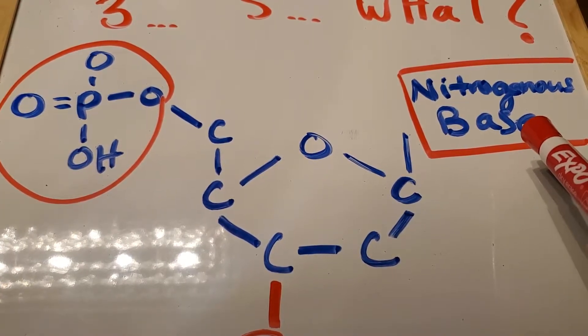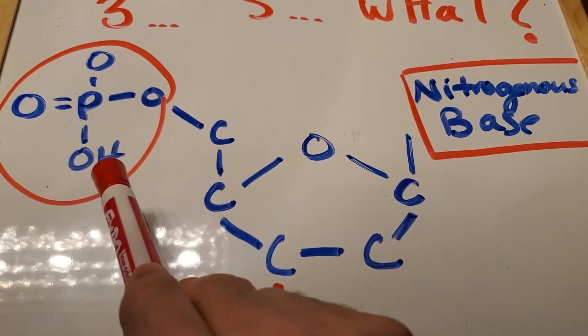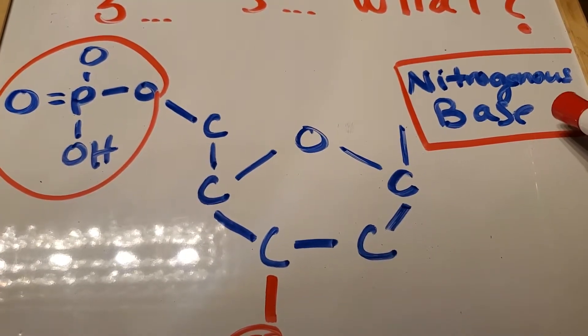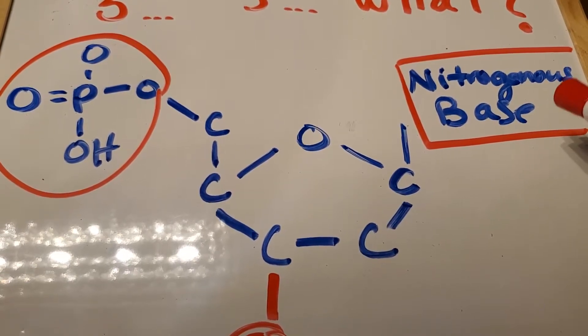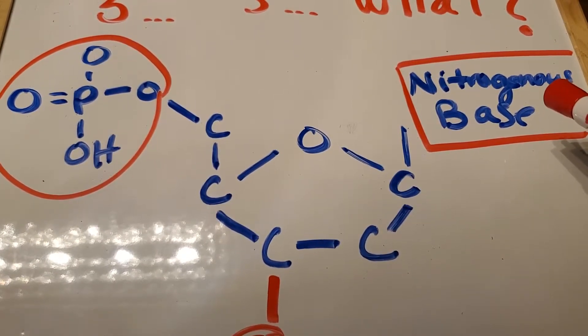These are going to differ. This stays the same, this stays the same. This is where we have our A's, our T's, our C's, and our G's. Depending on which of those nitrogenous bases you have, that's going to determine what kind of nucleotide you're dealing with.